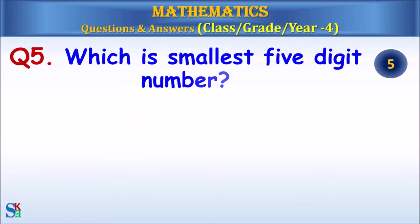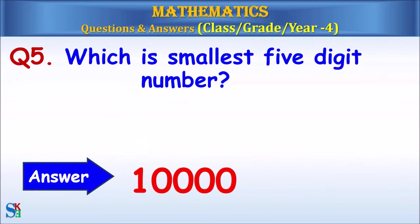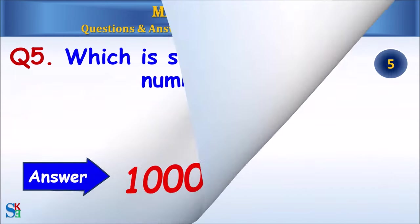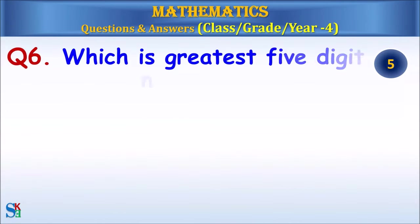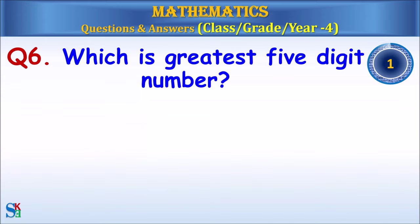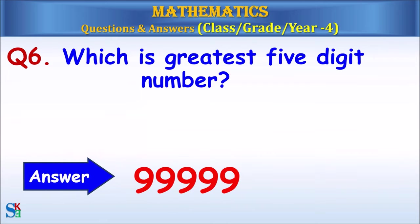Question 5: Which is smallest five digit number? The answer is ten thousand. Question 6: Which is the greatest five digit number? The answer is ninety nine thousand nine hundred and ninety nine.